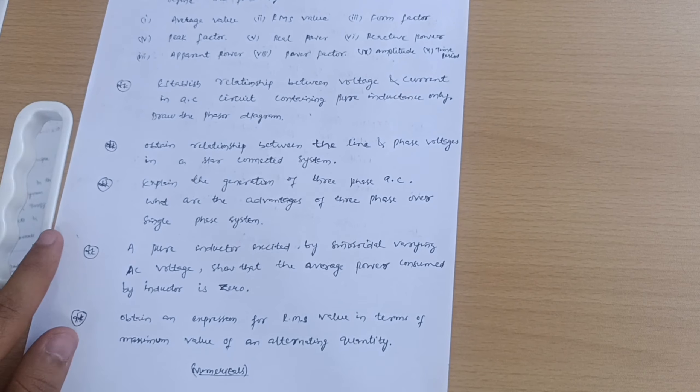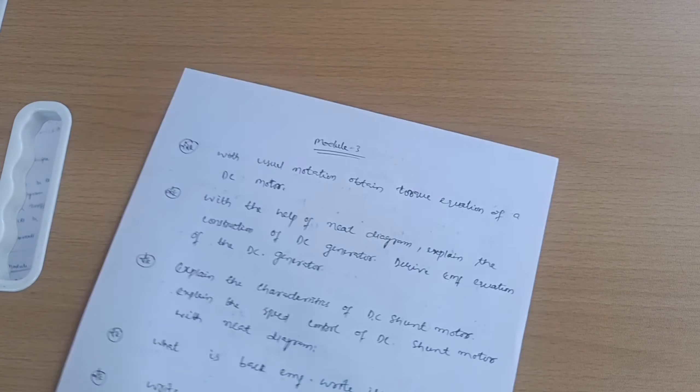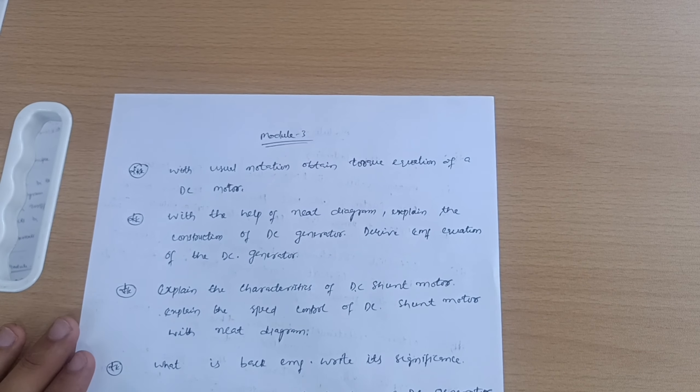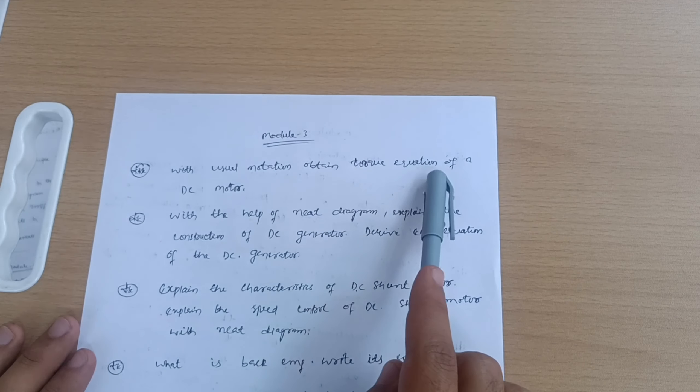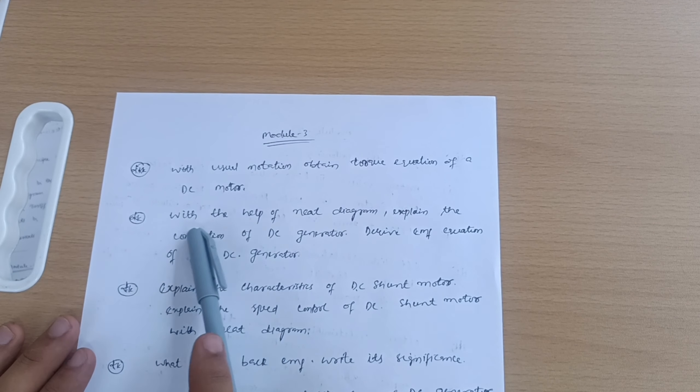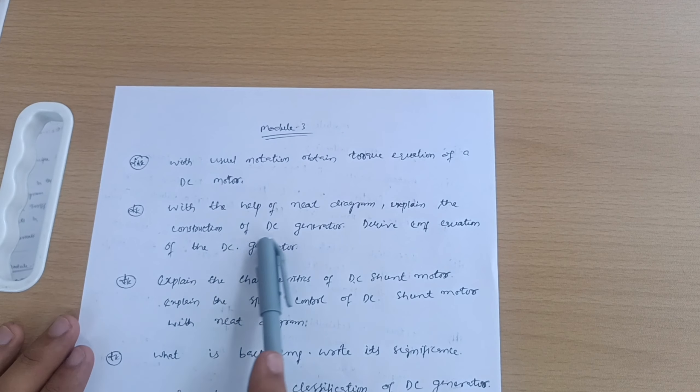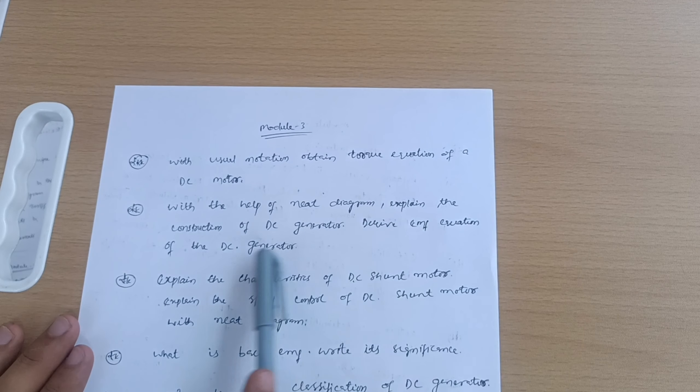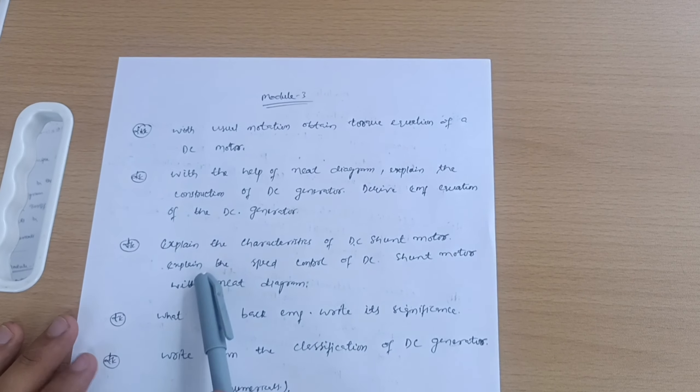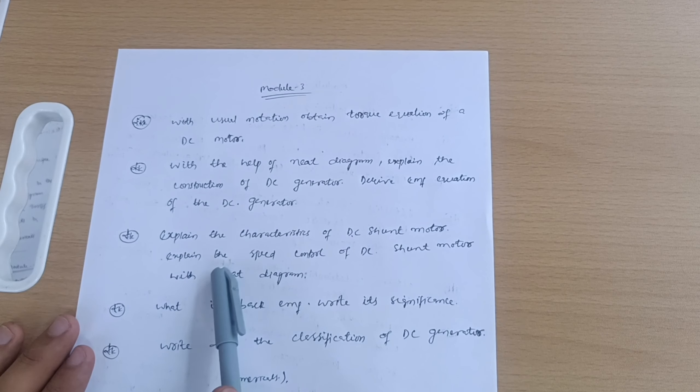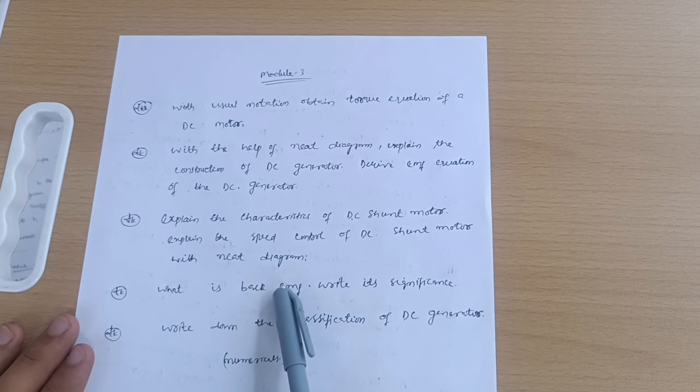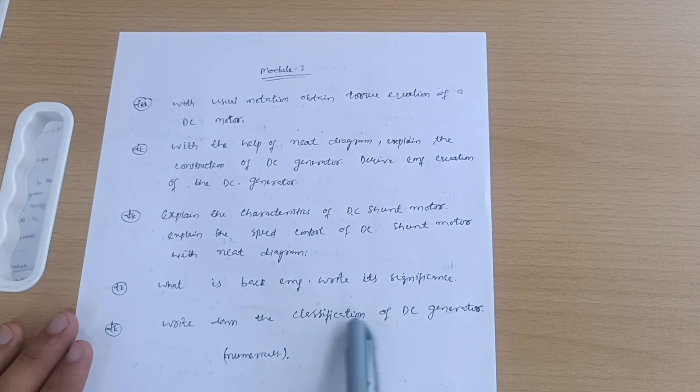Next is Module 3. I have taken five questions. With usual notation, obtain torque equation of DC motor. With help of neat diagram, explain the construction of DC generator. Derive EMF equation of DC generator. Explain the characteristics of DC shunt motor. Explain the speed control of DC shunt motor with neat diagram. What is back EMF? Write its significance and write down the classification of DC generator.